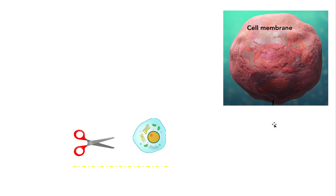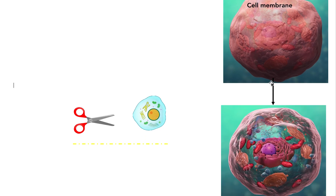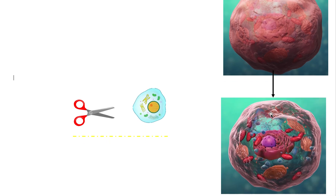As soon as we remove the cell membrane, what will we see? We will see the cytoplasm — the jelly-like cytoplasm — and all the organelles. So with the cell membrane gone, we can see all the organelles: the nucleus, mitochondria, rough ER, everything, including the jelly-like cytoplasm.